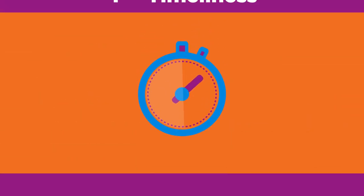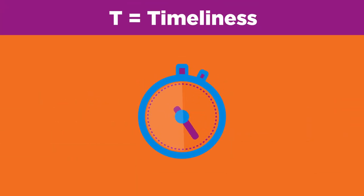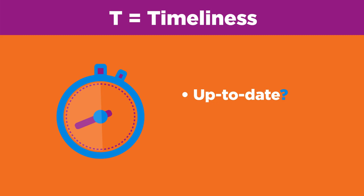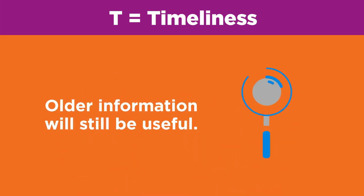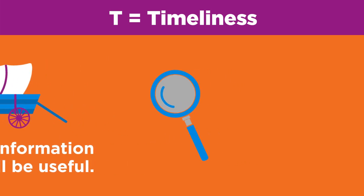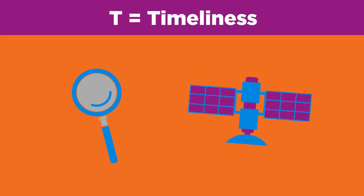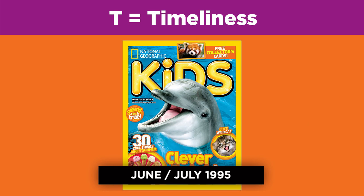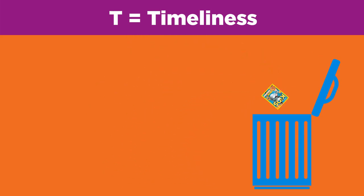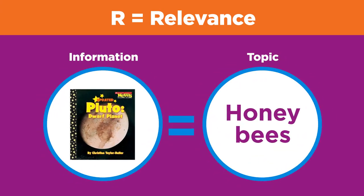Use the TRAP method to evaluate each potential source, eliminating those that do not pass any of the TRAP tests. Timeliness: ask yourself, is the information up to date or current? Older information will still be useful with some topics like history, but others such as technology will require very recent information. If timeliness matters, be sure to check the date that your book, magazine, newspaper, or website was published or created, and eliminate sources that do not fit your needs.